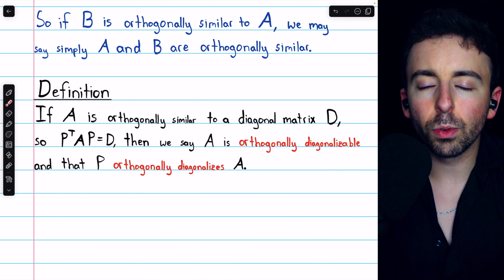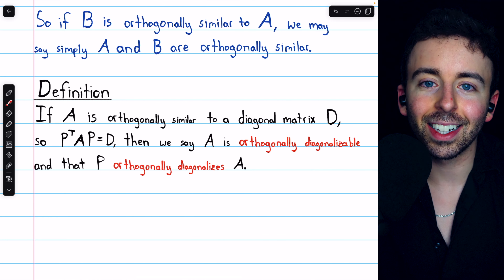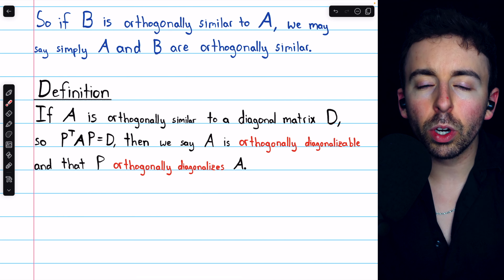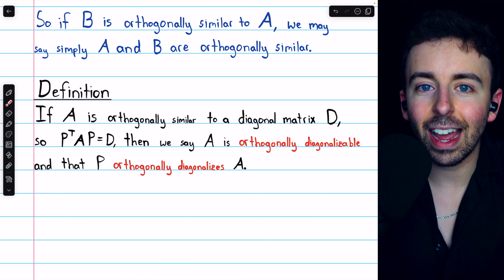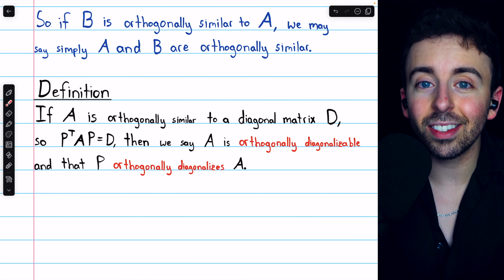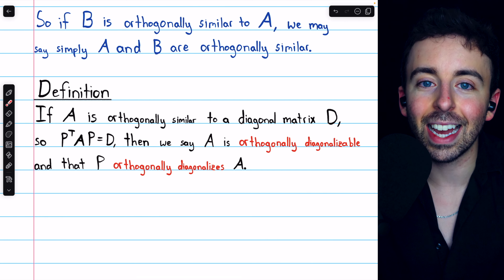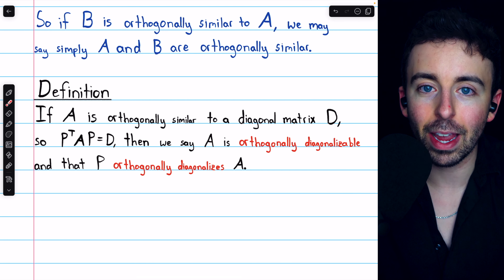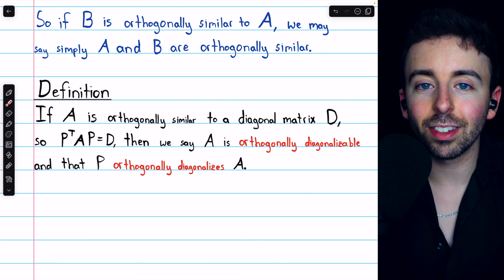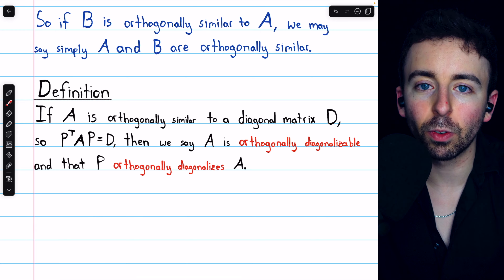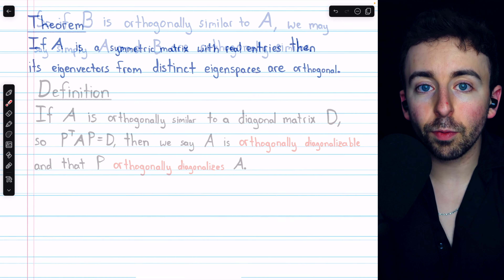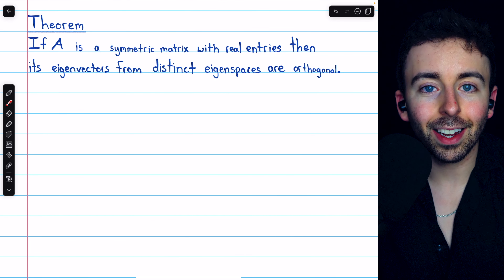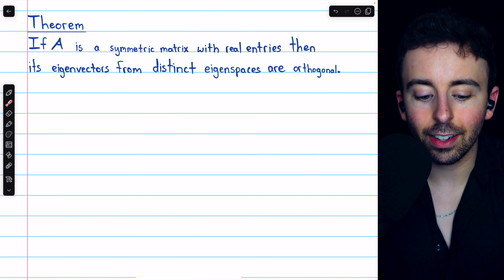Before we go through the steps of orthogonal diagonalization, we're going to prove two theorems. The first will help us prove the second, and in proving the second we will see the steps to orthogonally diagonalize a matrix and we'll see exactly what class of matrices are orthogonally diagonalizable.